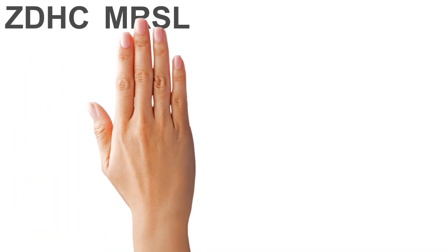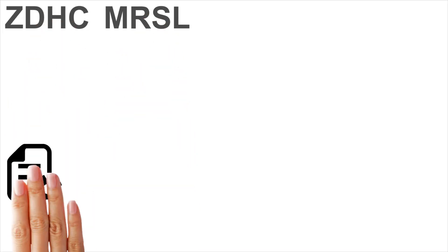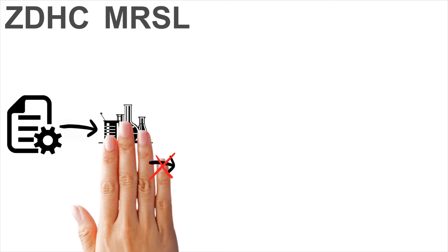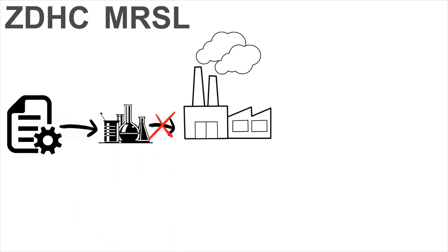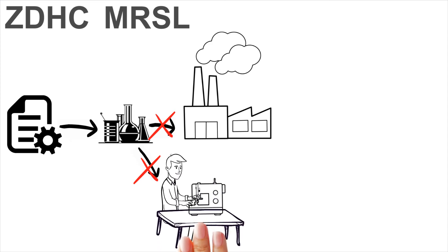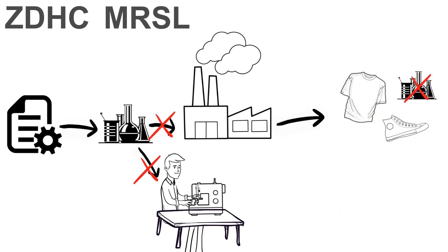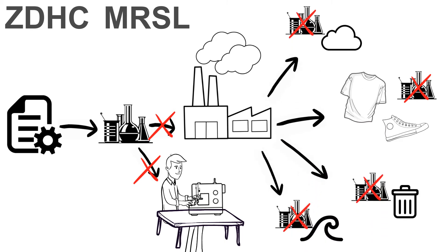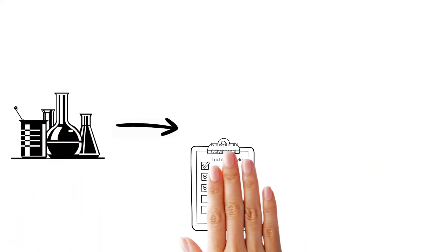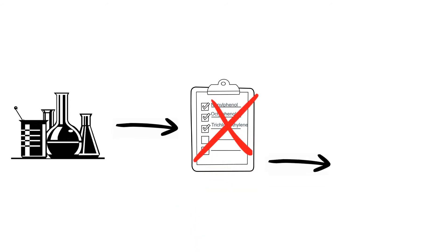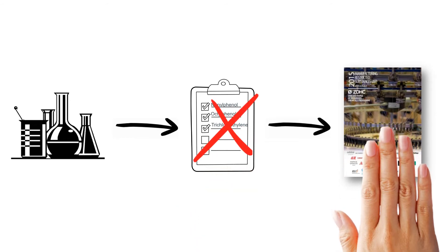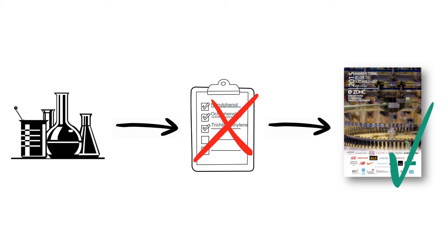The intent of the ZDHC MRSL is to control the input of chemical formulations used in manufacturing by removing priority chemicals from the manufacturing process and, in doing so, keep them out of finished products, wastewater, sludge and air emissions.